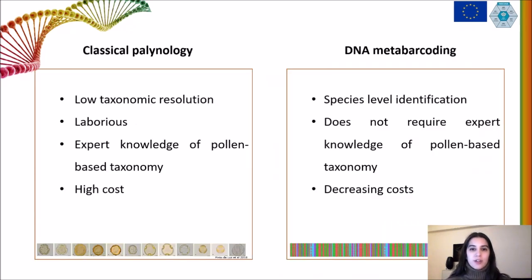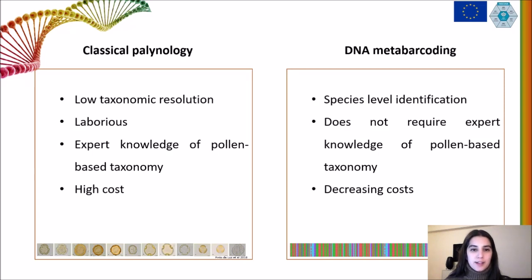The botanical identification of bee-collected mixed pollen samples has typically been done by classical palynological methods involving identification of pollen grains under a light microscope. However, this method is laborious, requires expert knowledge, and often only provides family-level identification. DNA metabarcoding is emerging as an alternative to classical palynology because it potentially allows species-level identification without expert knowledge of pollen-based taxonomy. Moreover, decreasing costs in high-throughput sequencing are making metabarcoding increasingly affordable.